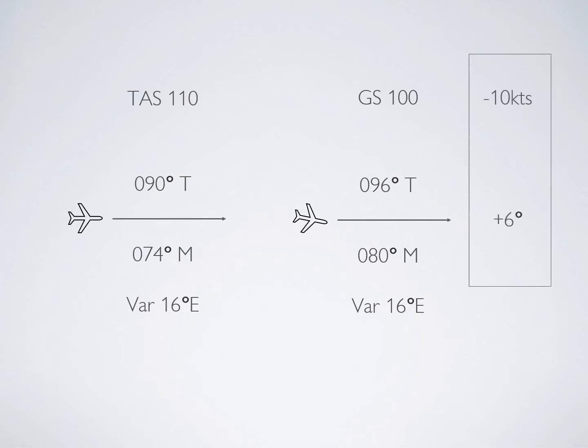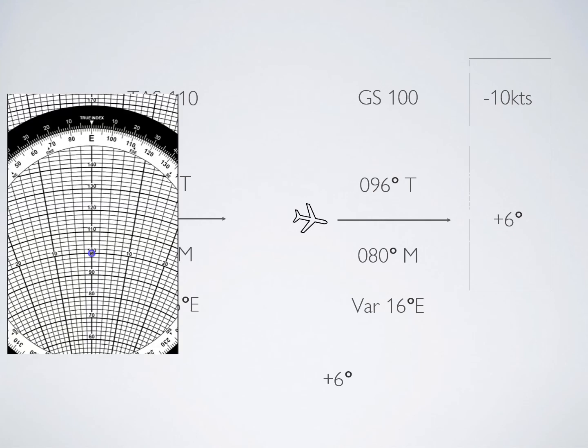Therefore, we have determined that our ground speed is 10 knots less than we intended. And we have a positive or right hand correction of six degrees. Line up your E6B on the grommet of the ground speed, which is 100 and your intended course at zero nine zero degrees true.